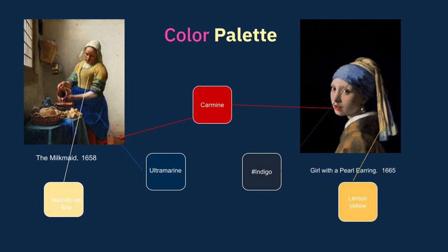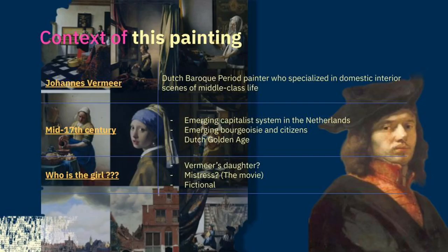Vermeer is known for his frequent use of costly pigments. In Girl with a Pearl Earring, he uses lemon yellow for the clothes, indigo for the headscarf, and carmine for the lips — a combination of three primary colors. Lemon yellow is a very high-profile color, but when combined with the complementary color indigo, it makes the whole painting look harmonious and quiet.